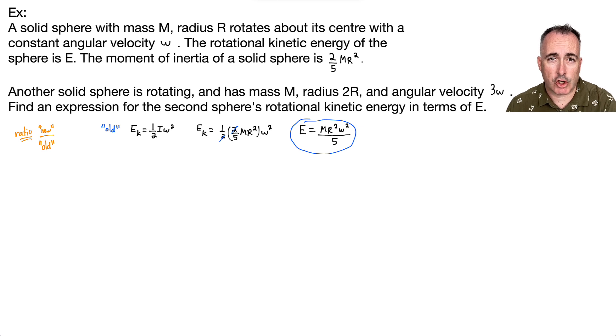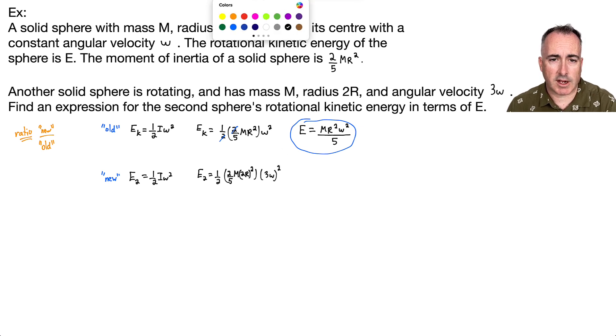Now I need an equation for new. E2 is still one half I omega squared. So E2 equals one half, and here's where it changes. I've still got two fifths going on, and M is the same, but the radius is 2R, and all that is squared. Don't forget the brackets around the 2R. All that times 3 omega squared.